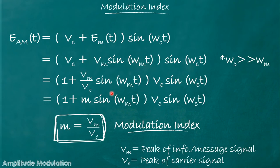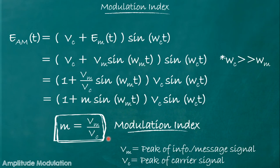Here we get the term vm/vc. This vm/vc is called the modulation index and it is denoted by small m. Here vm is the peak of the information or message signal and vc is the peak of the carrier signal. So modulation index is just the ratio of vm and vc.